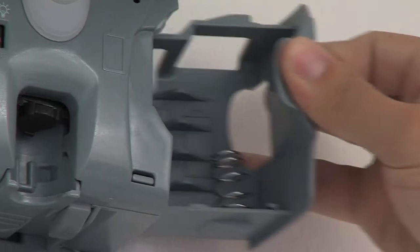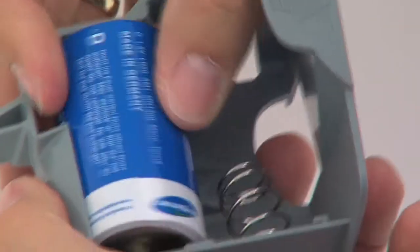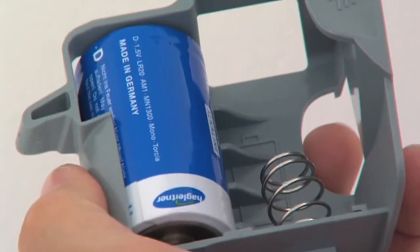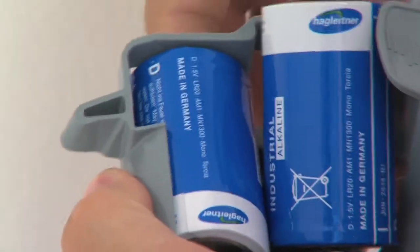The battery compartment is accessible from the side and is easy to remove. The Xebu Sense Fresh Air requires two D-type batteries. It is important to insert the batteries in the correct order.